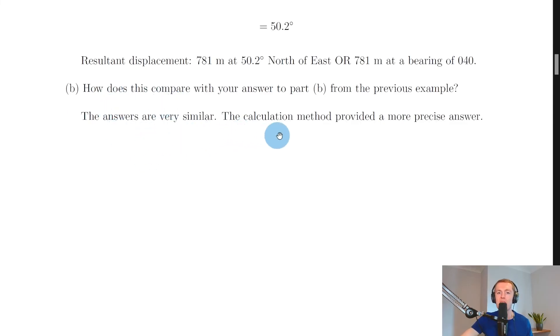So we can say the answers are very similar, but you'll have seen that the calculation method provided a more precise answer. In terms of the magnitude, we got 781 meters as opposed to 780 meters, and we got a slightly more accurate angle from doing a calculation.